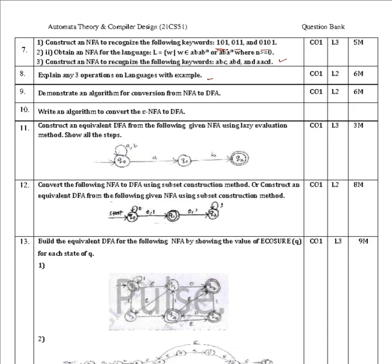Demonstrate the algorithm for conversion from NFA to DFA — they'll ask for the algorithm along with a problem. Also: write an algorithm to convert epsilon-NFA to DFA. Next, construct an equivalent DFA for a given NFA using the lazy evaluation method, which can be solved in a single step.